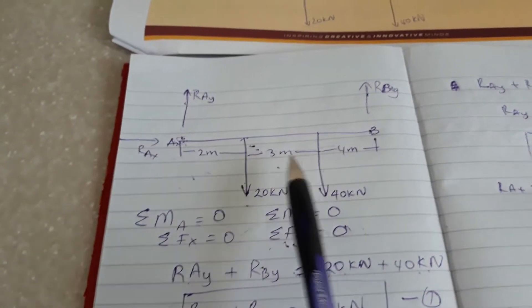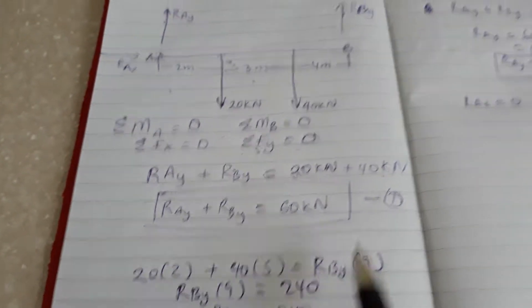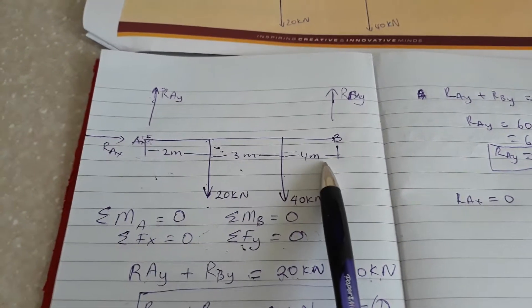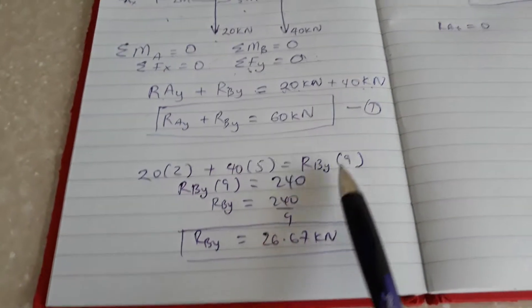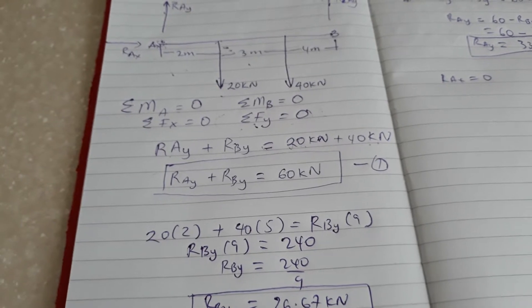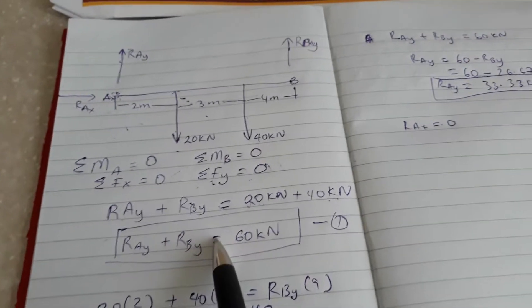Plus 40 times the total distance which is 5, equals RBy times the entire length of the beam which is 9. We get an answer of 26.67 kN which we can just put back into this equation.